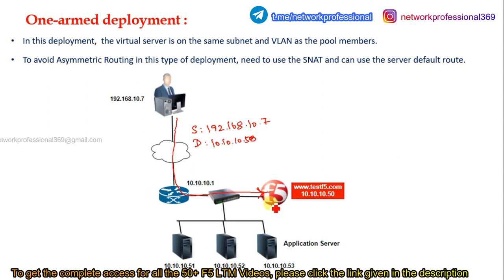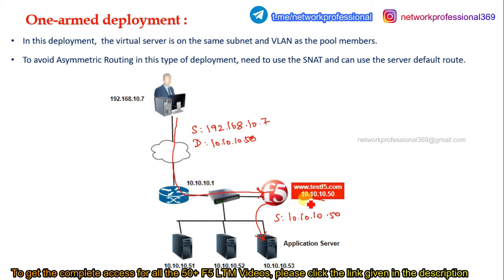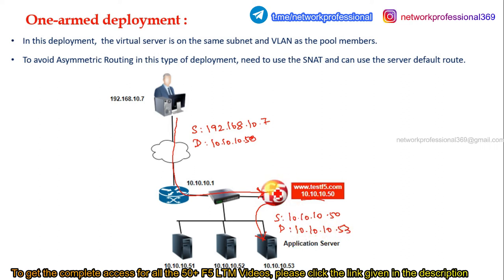Based on the load balancing algorithm, the packet is moved to a server. In this packet, the source is replaced as 10.10.10.50, which is the virtual server's IP address. The destination IP address is the actual application server's IP — the pool member's IP. This is how F5 performs source NAT and destination NAT, forwarding the packet to the server.